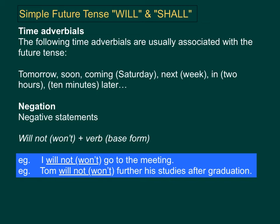We also use will and shall commonly in negation, or negative statements. We use them in the following form: will not plus a verb in its base form, or we can use the short form of will not, which is won't. For example, I will not go to the meeting. I won't go to the meeting. Tom will not further his studies after graduation. Tom won't further his studies after graduation.